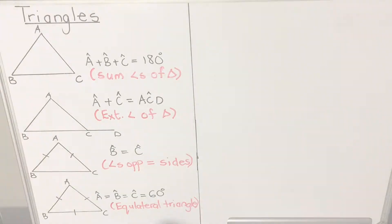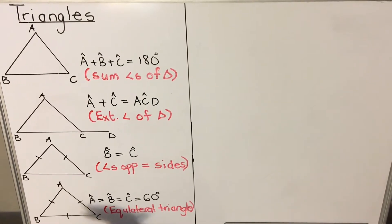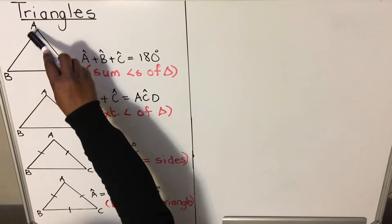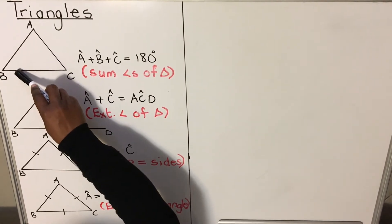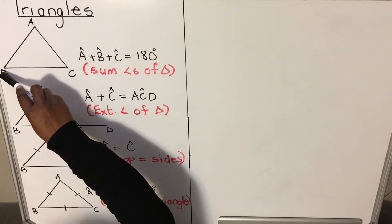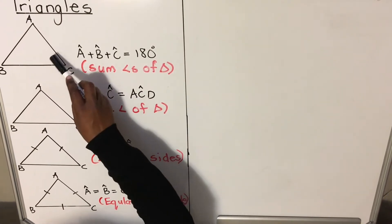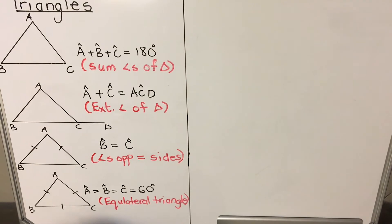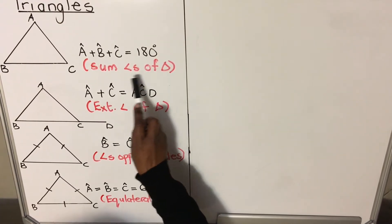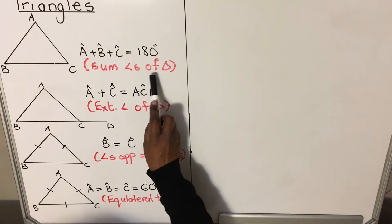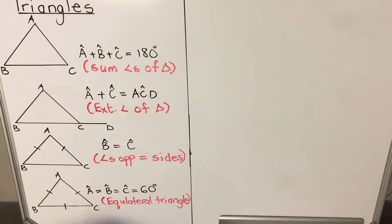Let's look at the properties of triangles. The first property is about the angles. When you write an angle you can use three letters or one. This angle is called angle A, that one is angle C, that one is angle B — meaning this space here. When you add angle A, angle B, and angle C, they are all 180 degrees. The angles are measured in degrees, and in Euclidean geometry the reason you write is: sum of angles of a triangle. When you add the angles of a triangle you get 180.